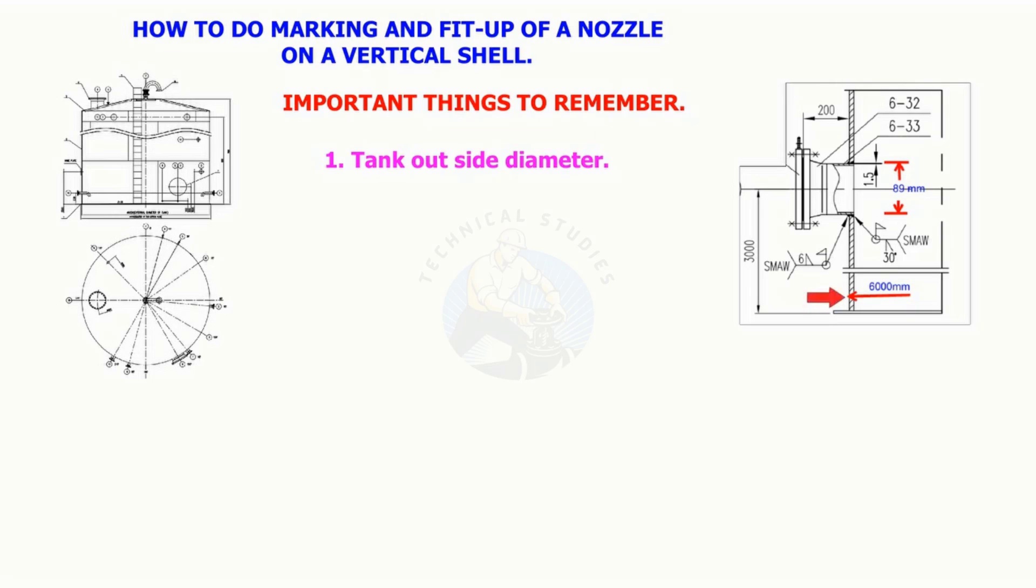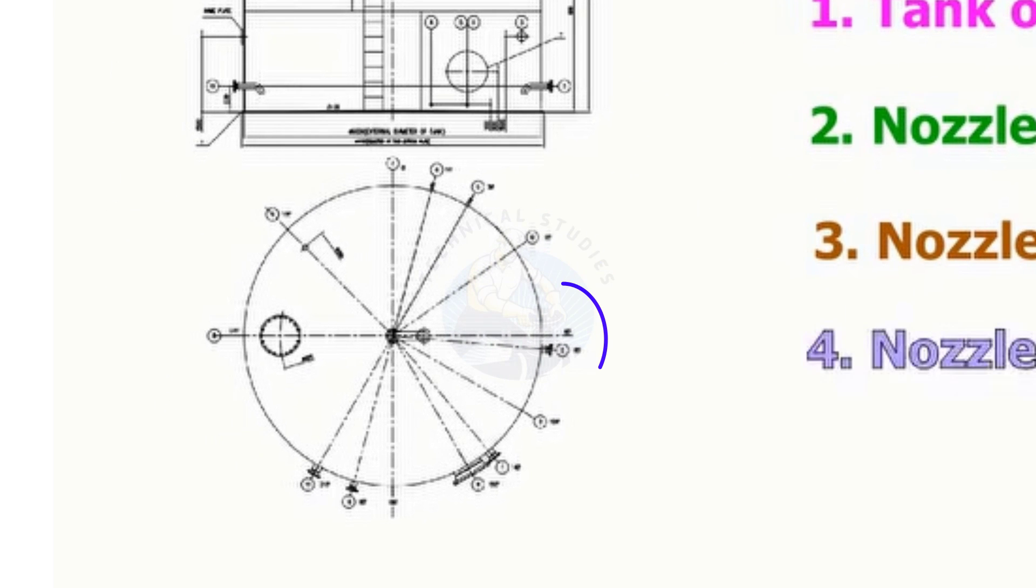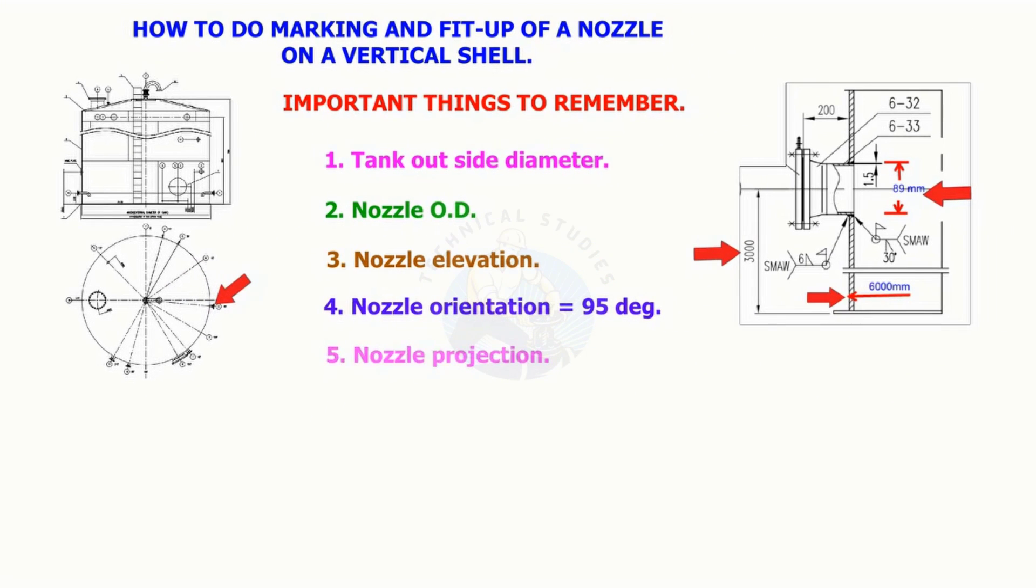Important things to remember: tank outside diameter, nozzle OD, nozzle elevation, nozzle orientation (in this case, 95 degrees), nozzle projection from the shell, and shell thickness (in this case, 10 millimeters).